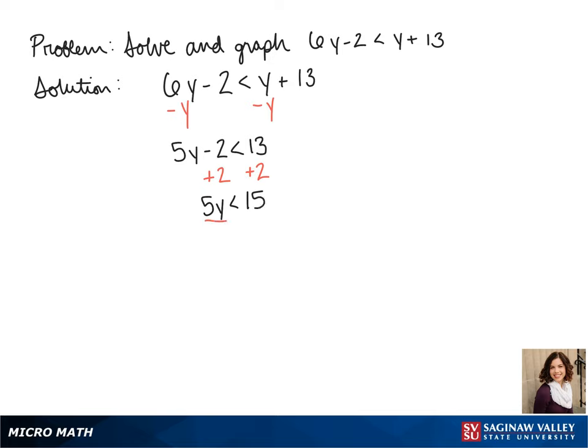To get y by itself we divide both sides by 5 and we get y is less than 3.